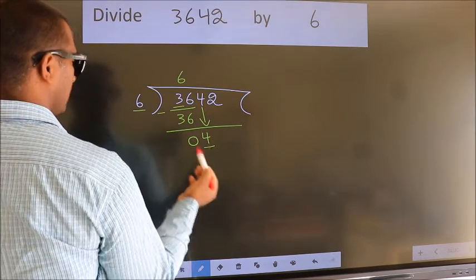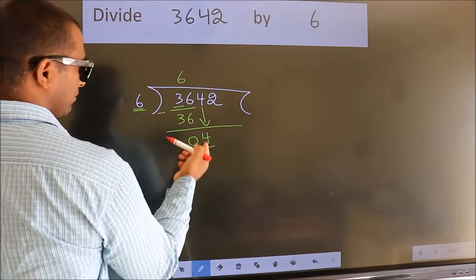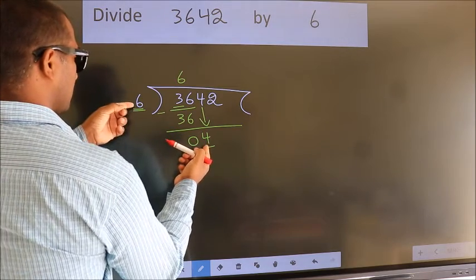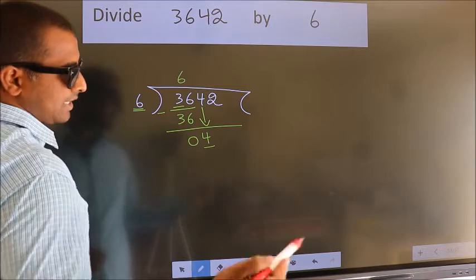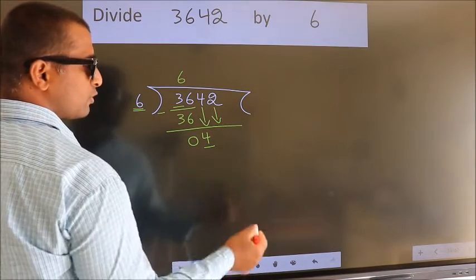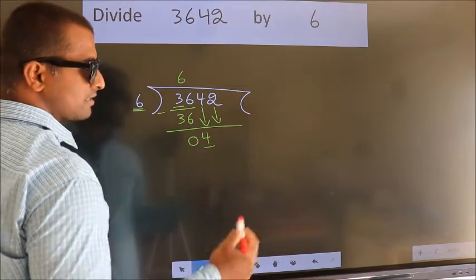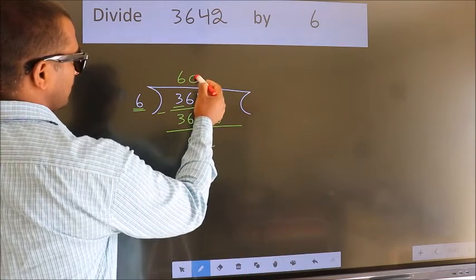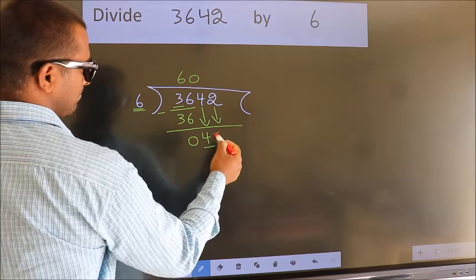Here we have 4, here 6. 4 is smaller than 6, so we should bring down the second number. And the rule to bring down the second number is put 0 here. Then only we can bring down this number.